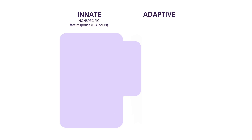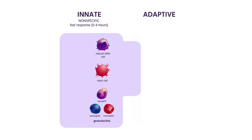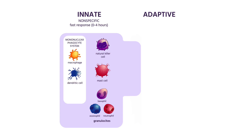Numerous cells are involved in the innate immune response including natural killer cells, mast cells and granulocytes, as well as the phagocytic cells such as macrophages, dendritic cells and monocytes that utilize phagocytosis and are equipped with receptors which recognize a variety of microbial products known as antigens, resulting in activation of the slower acting but more specific adaptive immune system.